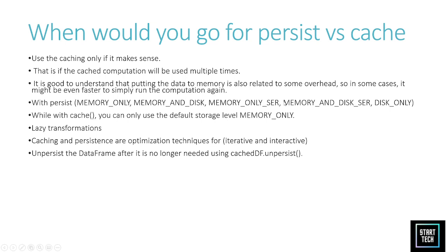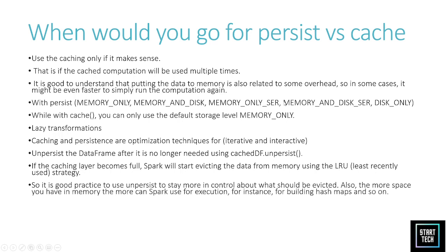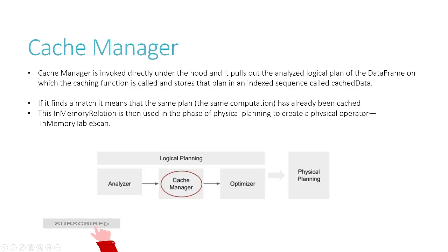If you are not doing any iterative operations but still caching, that is not a good practice. Also, unpersist exists in Spark — when you cache data, you should unpersist it to release it. By default, Spark evicts data using LRU (least recently used), but you can unpersist prior to that for more control over memory.